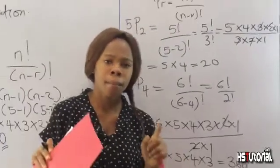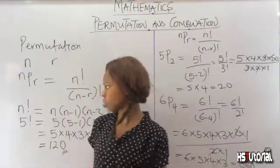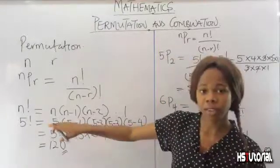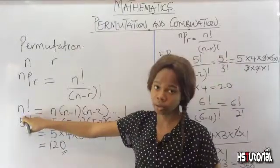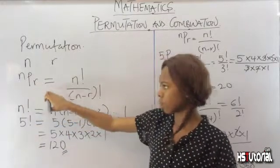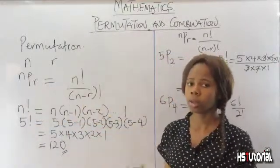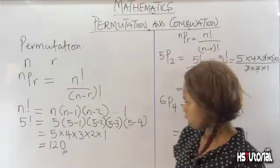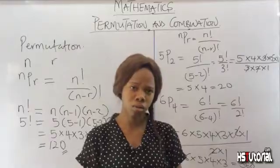This gives us 360. So that is the basic idea behind permutation. One thing to note is that you need to have knowledge of factorials, because you will use them when solving permutations. In our next section we take combination.